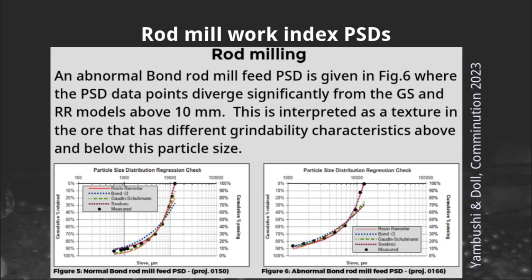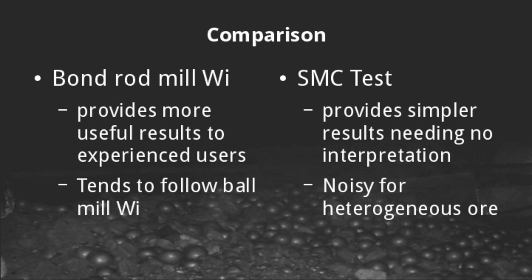You can infer ore behavior from these inflection points in the particle size distribution curves. You get this capability in the rod mill work index, but you do not get this ability in an SMC test. The rod mill work index test also gives a tendency for the tumbling test results to match other tumbling tests like the ball mill work index test — we'll see what that means in the next slide.